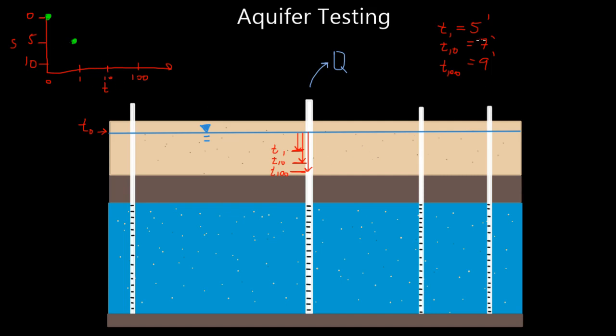And then at T10, we said we had seven feet of drawdown, so maybe that's right there. And then at T100, we said we had nine feet of drawdown, which is like right there, about. So we're plotting up these drawdown data over time.